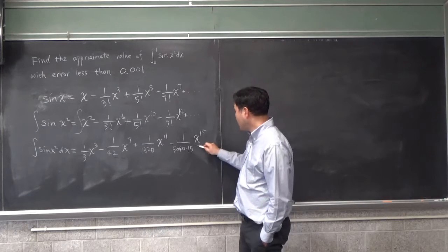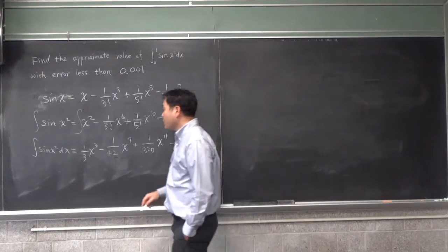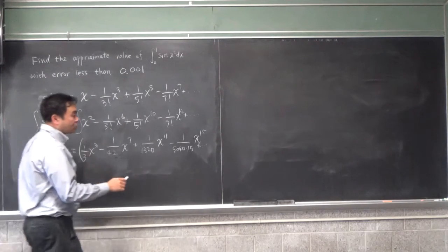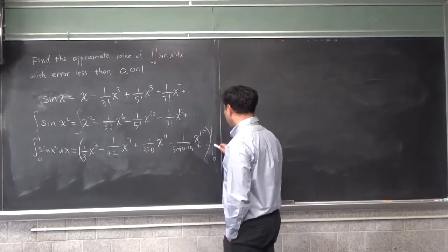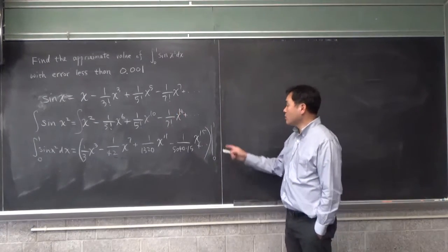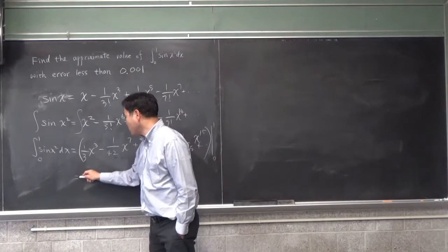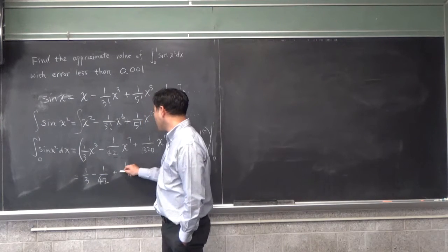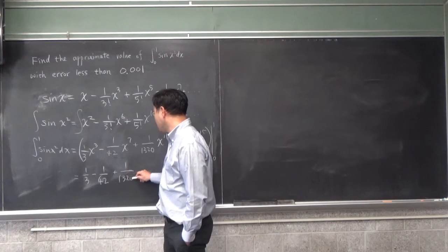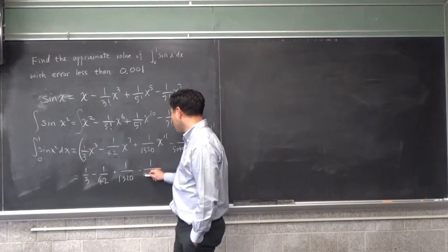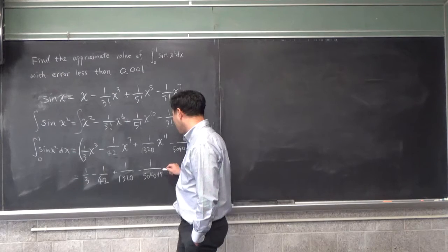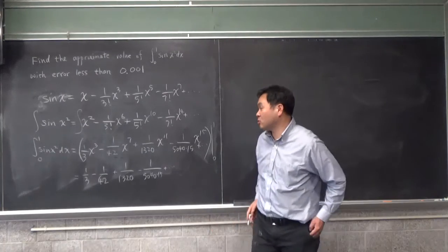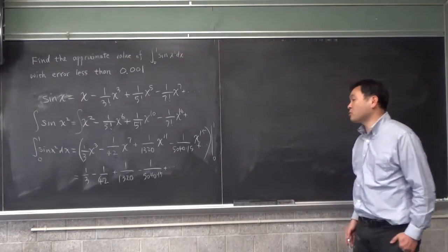Now, because we're trying to integrate from 0 to 1, this has to be evaluated from 0 to 1. So when you plug in 1, this is the series you get. You get 1/3 minus 1 over 42 plus 1 over 1320 minus some big number, 5040 times 15, and then plus something. And then when you plug in 0, there's nothing. So this is the actual value of the integral of sin(x²) from 0 to 1.